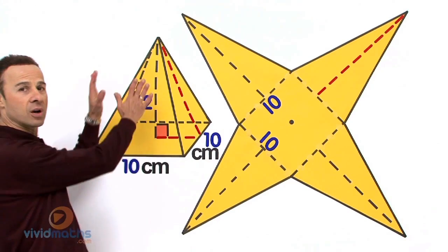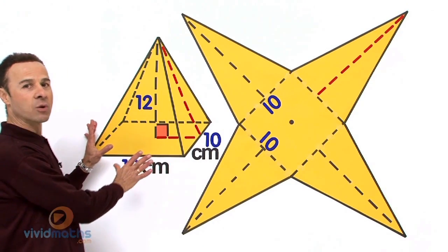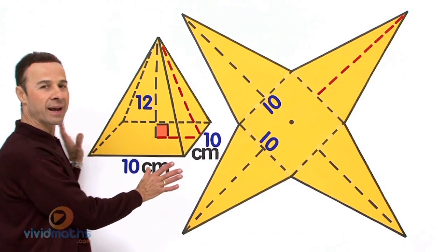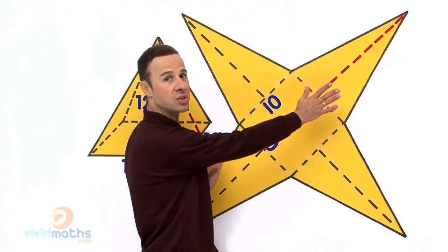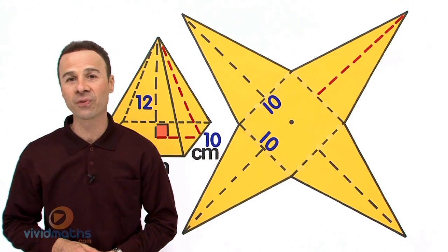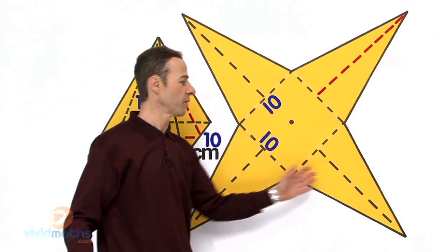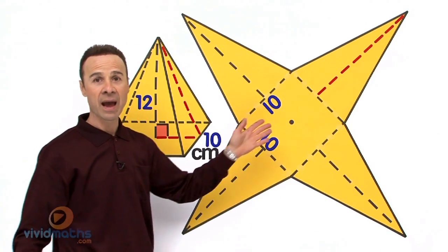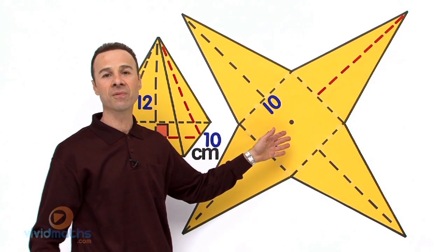Over here we have the pyramid in a 3-dimensional version in this diagram. Once we flatten this out and spread it out into the exterior covering, it looks like this type of net. Now with a square pyramid, we have how many faces? Yes, we have 5 faces: 1, 2, 3, 4 triangles and the fifth face is the bottom base, the square part of this particular pyramid.